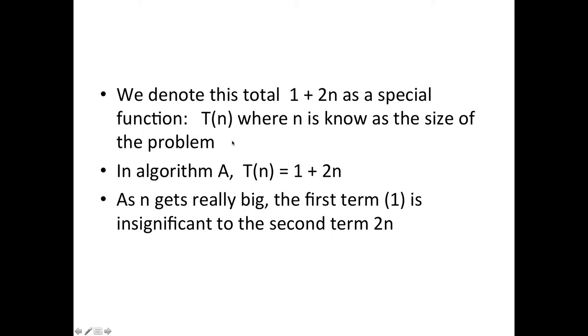We're going to denote this total 1 plus 2n as a special function. We're going to call it the function T(n) meaning the time for the size of the problem which is n - like one to a thousand or one to a hundred thousand. That ten thousand or hundred thousand is the size of the problem.